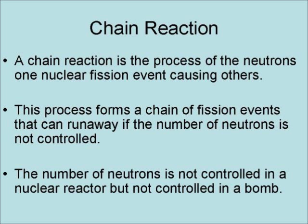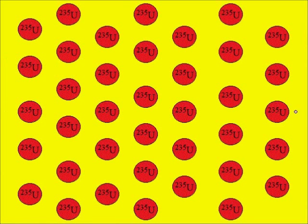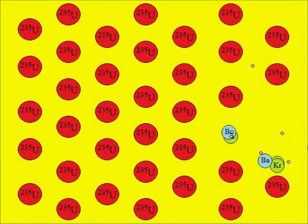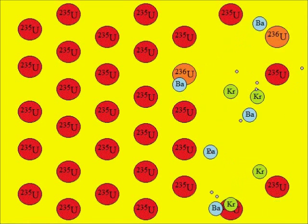The number of neutrons is controlled in a nuclear reactor, but not in a bomb. This is an animation of a nuclear chain reaction.